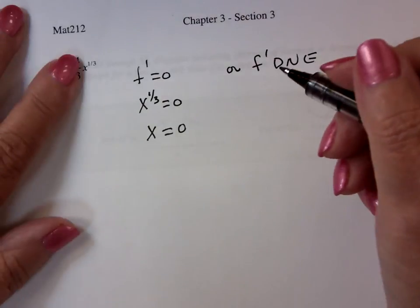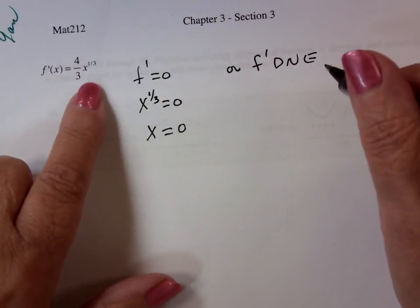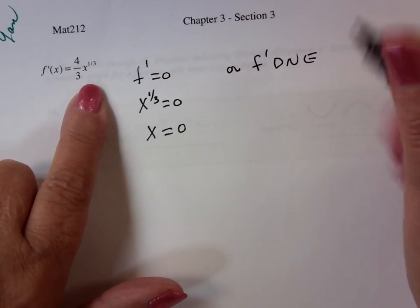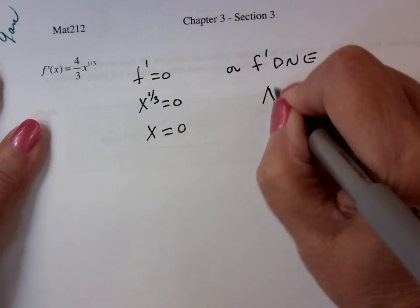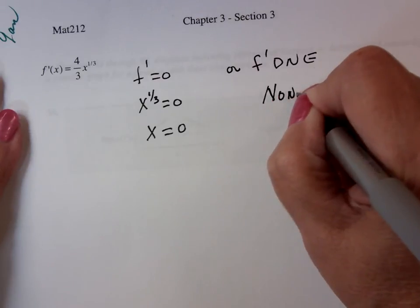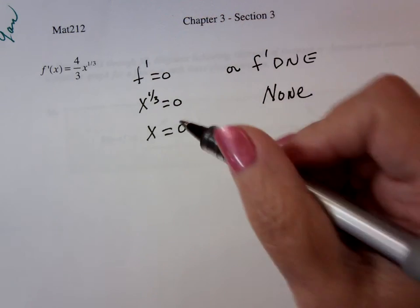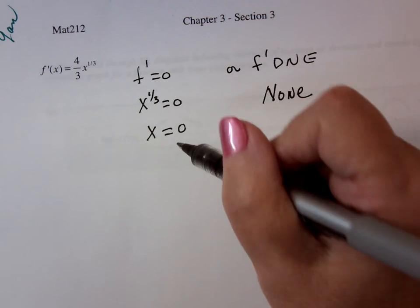Now, is there any place where x to the one-third is not defined? No. Domain is all real numbers. So at this point I can say there's nothing coming out of here. So what I'm dealing with is one critical number.